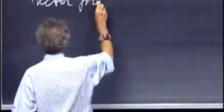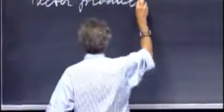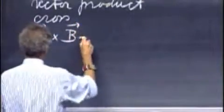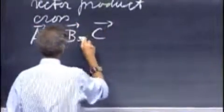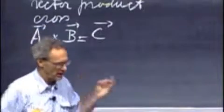Vector multiplication, which is called the vector product, or also called, most of the time I refer to it, as the cross product. The cross product is written like so, A cross B equals C. It's a cross, a very clear cross.